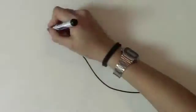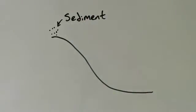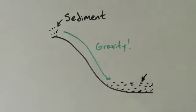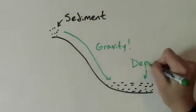But what if sediment is being deposited on a slope? Well, due to the effects of gravity, it will fall down and deposit in a flat layer at the bottom of the slope.